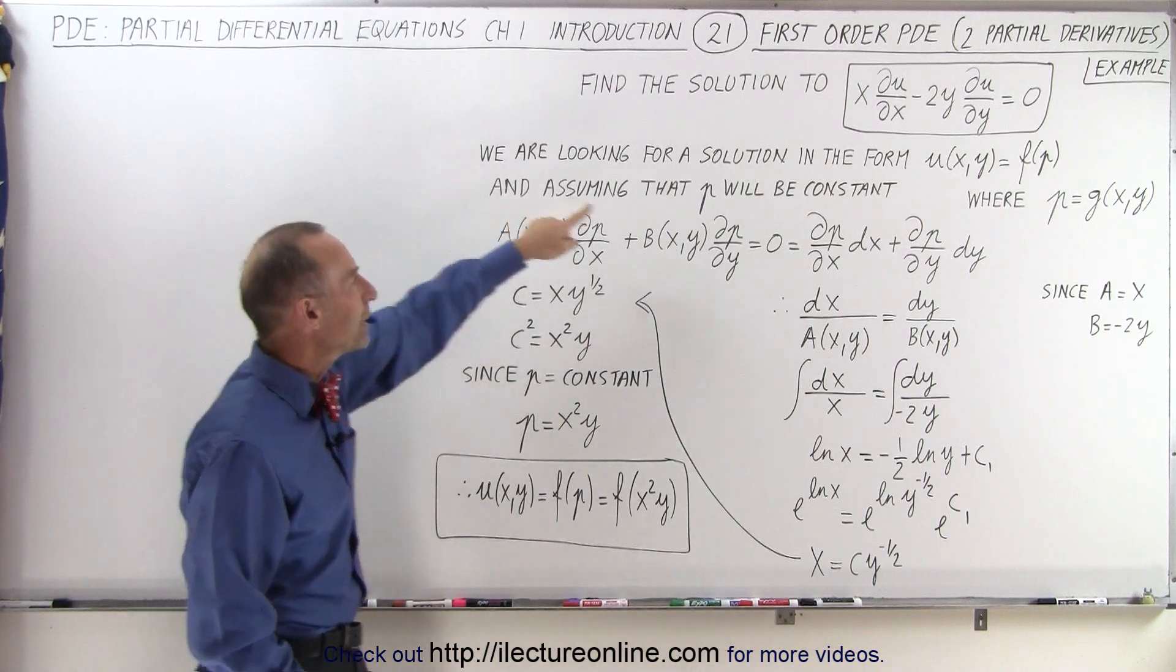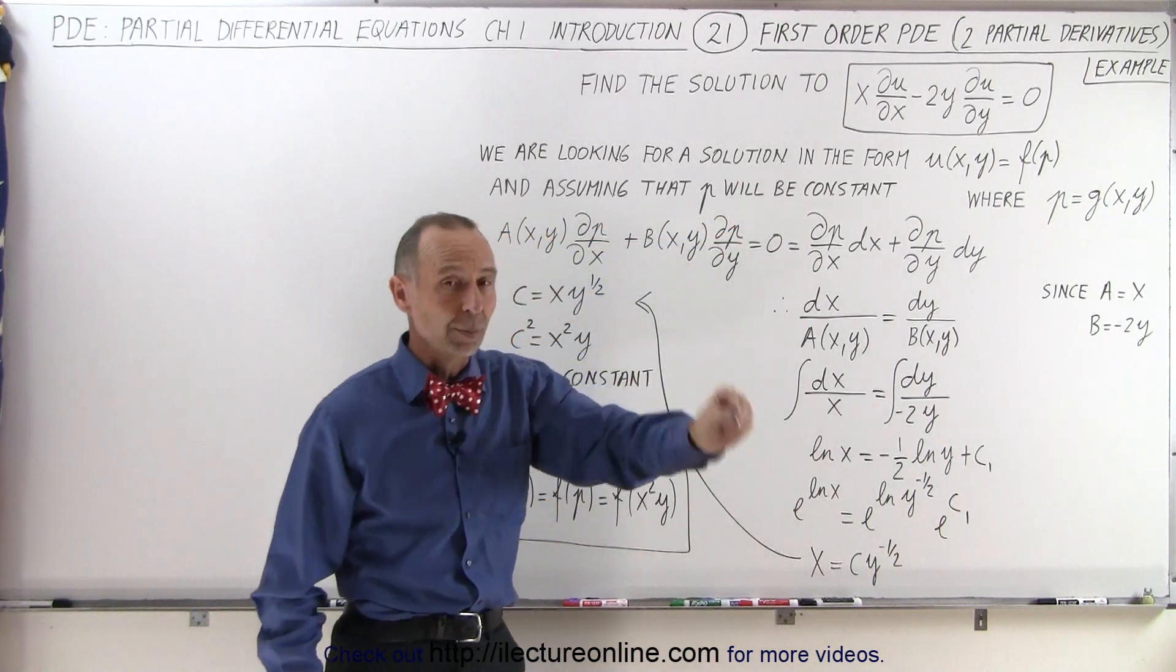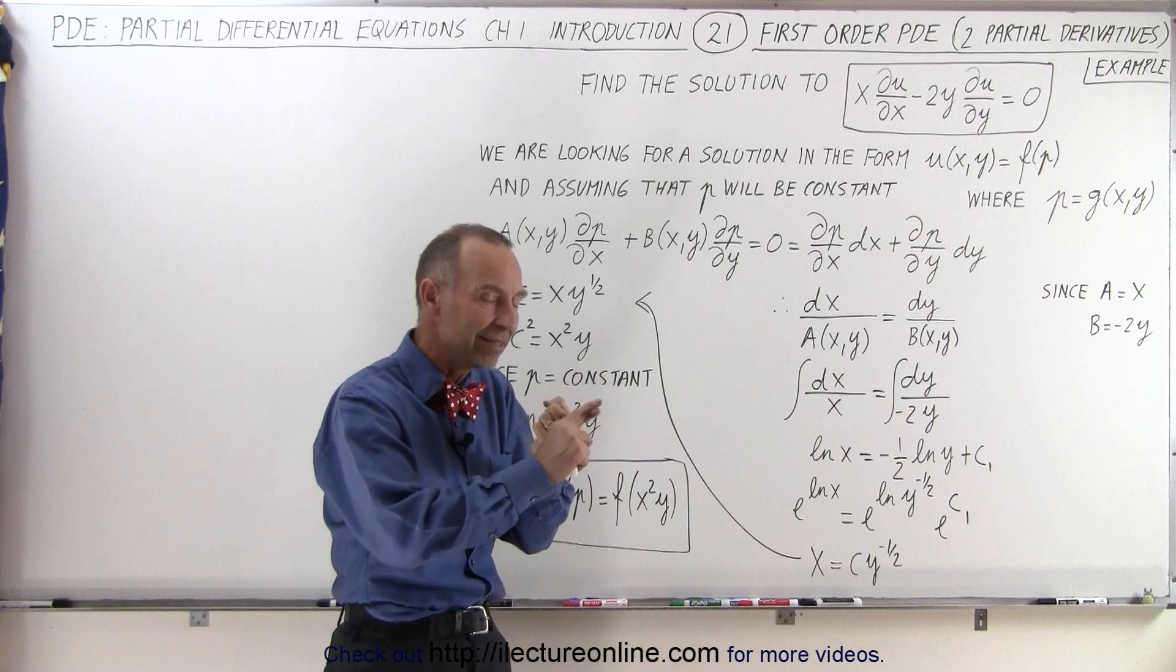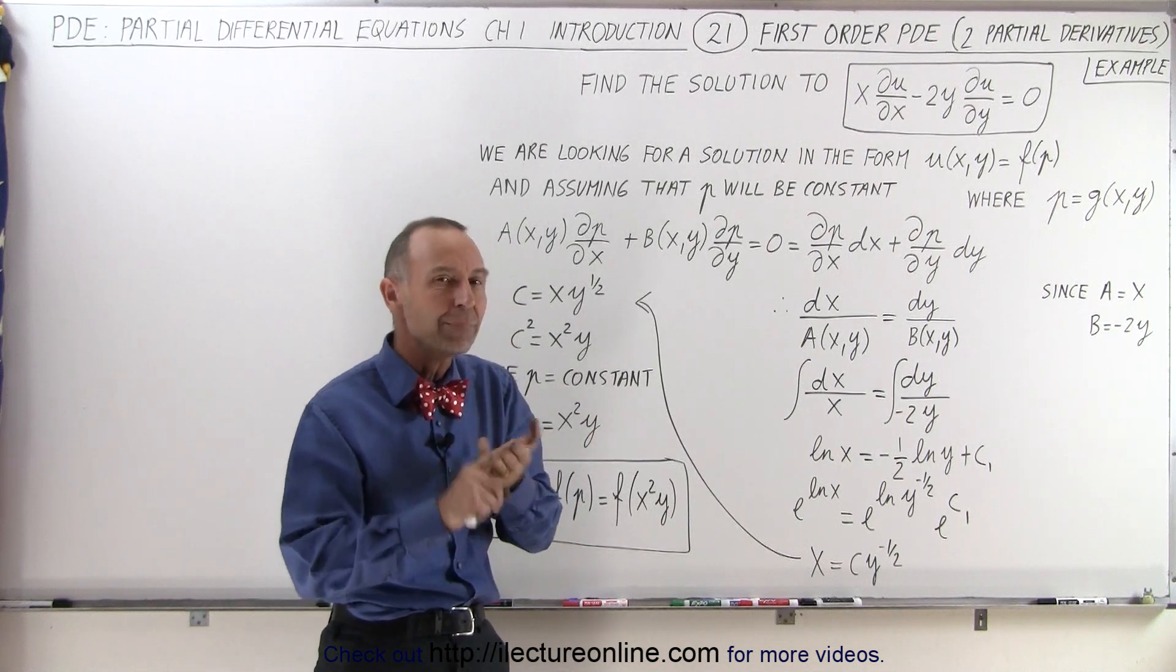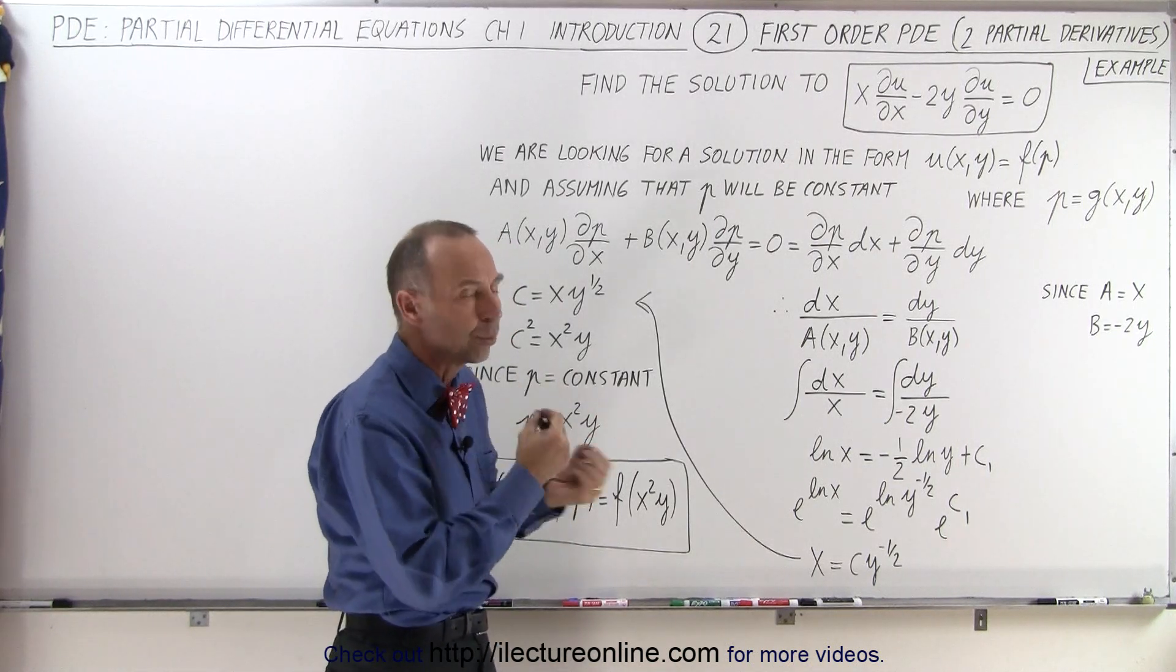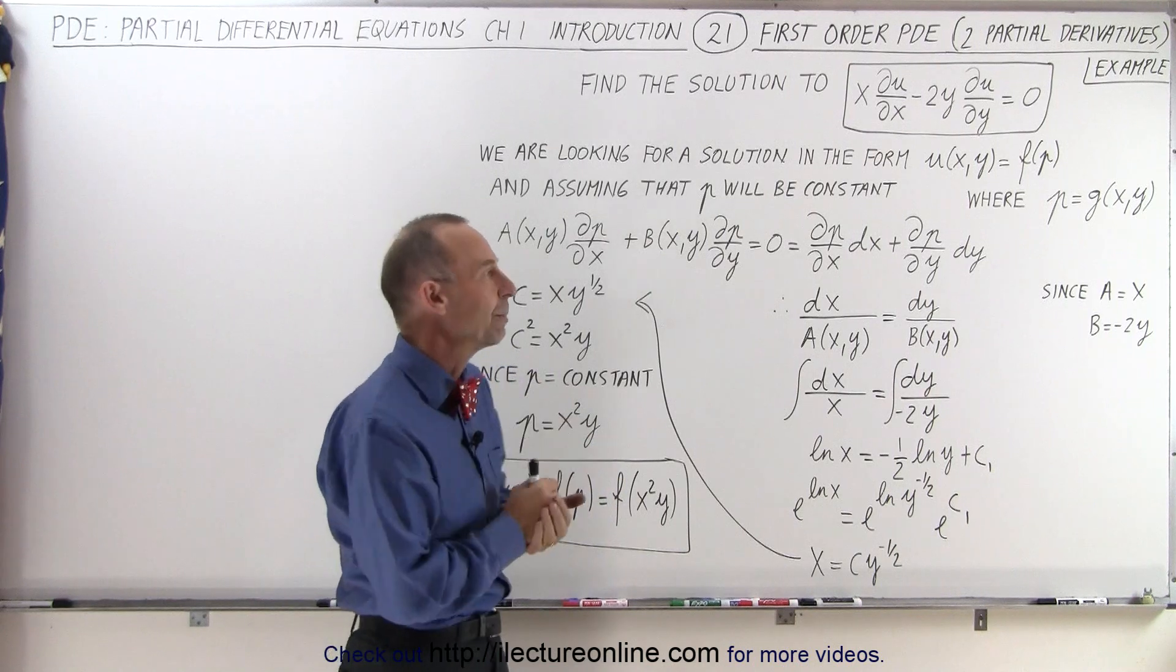We're going to also assume that p will be constant. Remember that's what we did in the previous video. We let c and r be zero and p had to be a constant. So x and y had to be such that p remained constant.